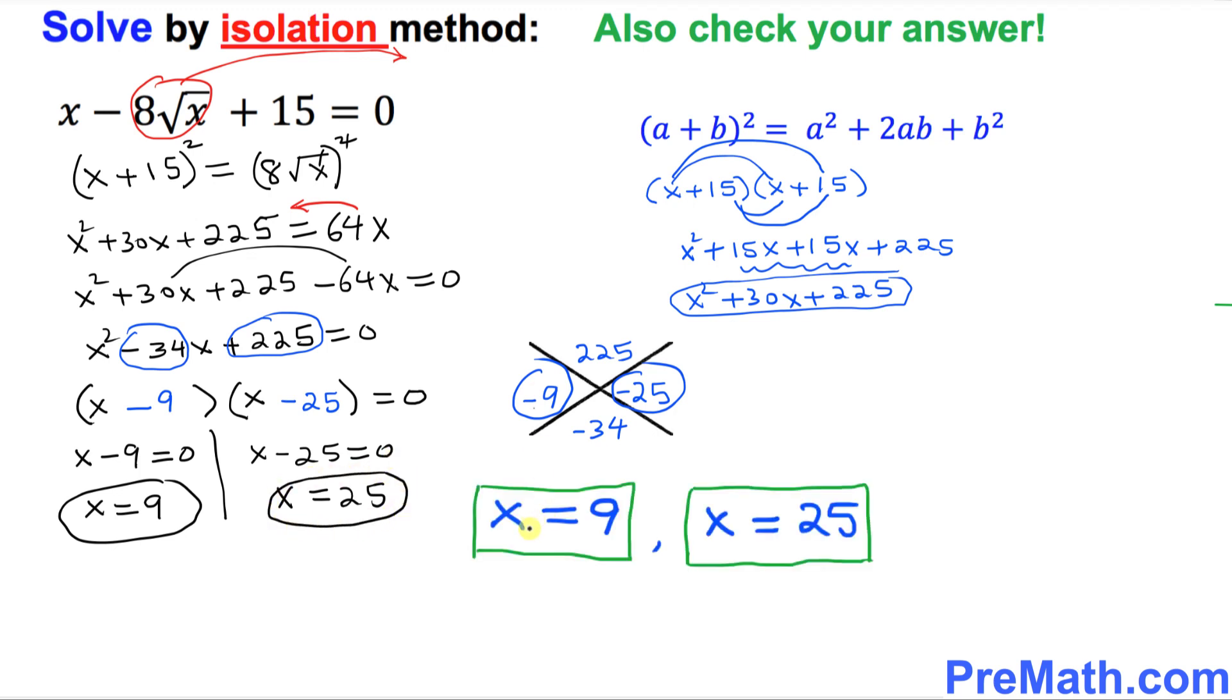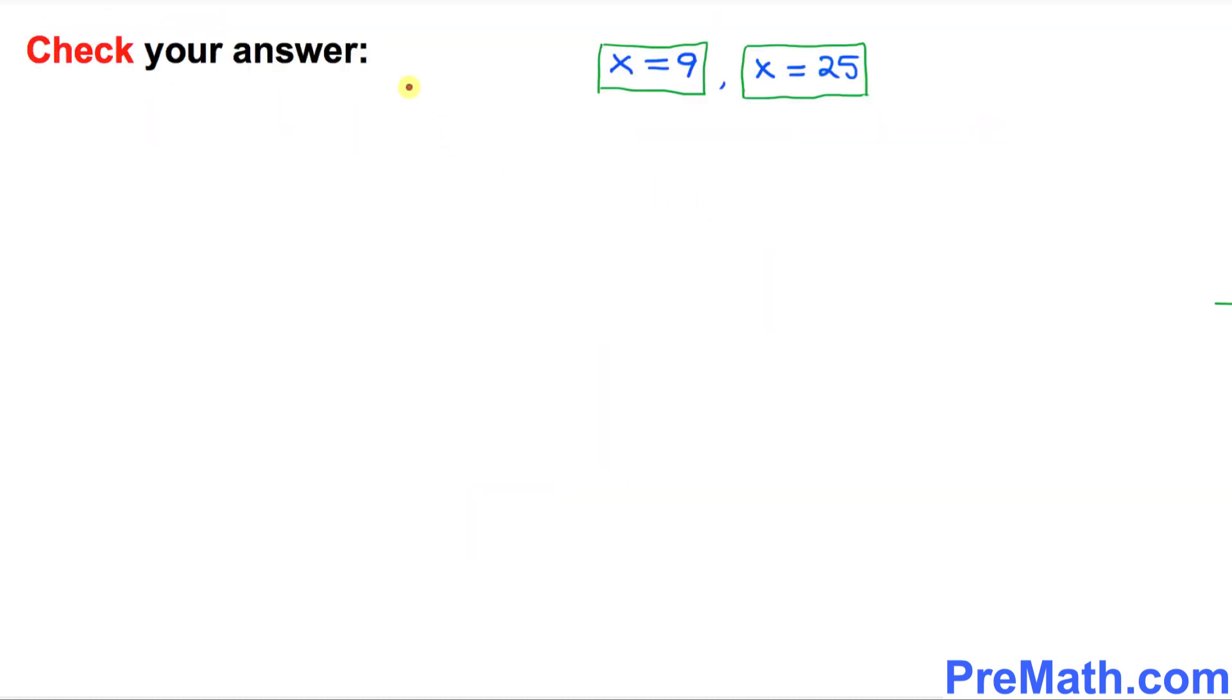So thus, our solutions turn out to be x equal to 9 and x equal to 25. In the next step, we're going to check these solutions. And in this next step, we are going to check these two given answers, x equal to 9 and x equal to 25.